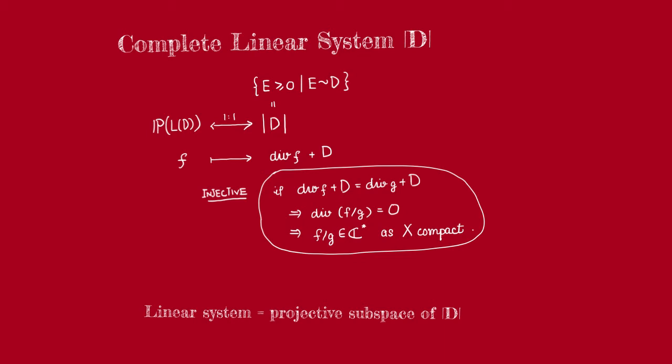Conversely, in the other direction, if we have a divisor e that is linearly equivalent to D, then e must be of the form div(f) + D for some f, because e is linearly equivalent to D. And because e is effective, that means f must lie in L(D).